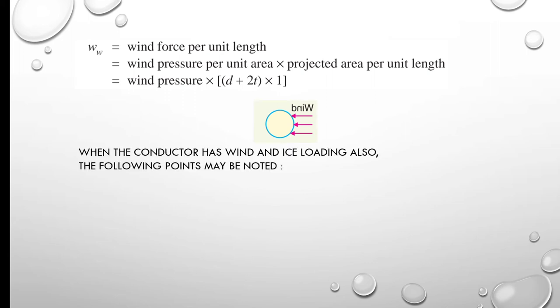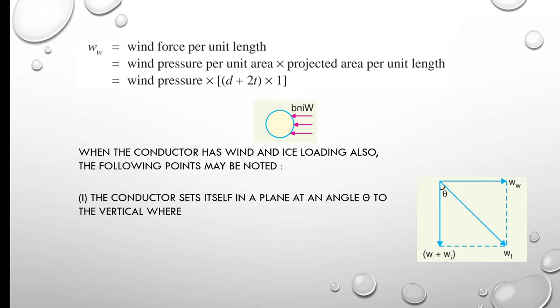When the conductor has wind and ice loading, the conductor sets itself at an angle θ to the vertical. There are two forces acting: Ww and W + Wi. These two vectors lead to a resultant vector, Wt.